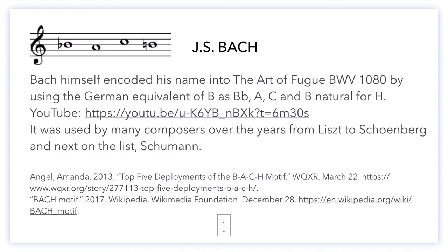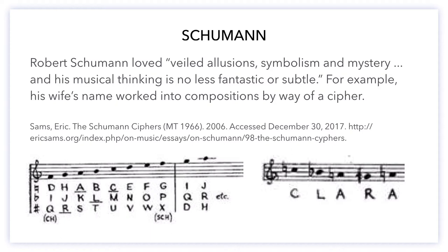Many composers followed in this trend — Liszt, Schoenberg, and of course Schumann. Schumann loved veiled illusions, symbolism and mystery, and his musical thinking is no less fantastic or subtle. For example, he worked his wife's name into compositions by way of a cipher. Her name, Clara, is worked out from the first measure on the left, where we have a row for the naturals, a row for the flats, and a row for the sharps.